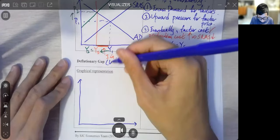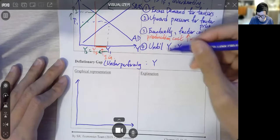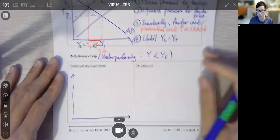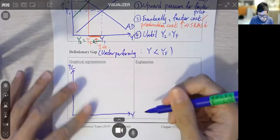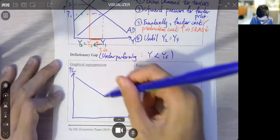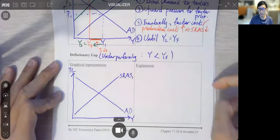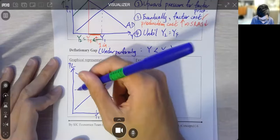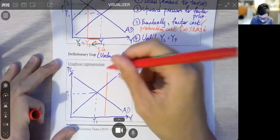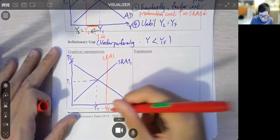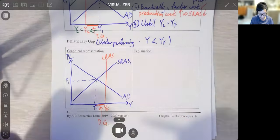Deflationary gap. Basically, the economy is underperforming. It's too bad. Now our output level has not reached the potential output level. It's just the opposite. And the graph is just the opposite. Now we have our AD. Then we have our SRAS1. This time we know, Y1 is here. P1 is here. This time we've explained Y is smaller than YF. So, LRAS should be on the right-hand side. YF here. Can you see? Now, Y is smaller than YF. So this gap, we have a name. It's called the deflationary gap.